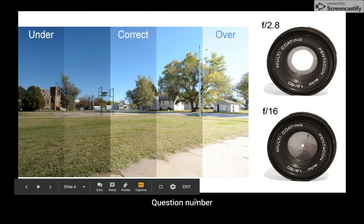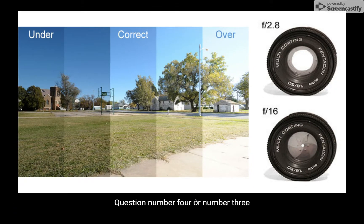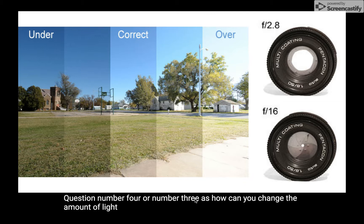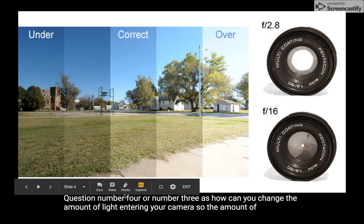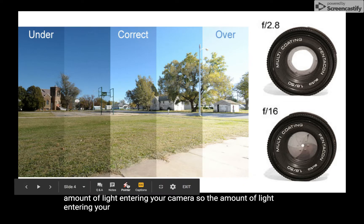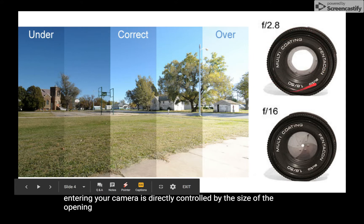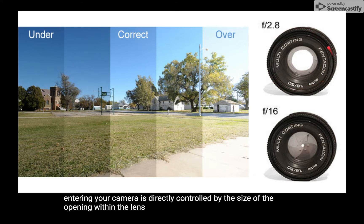Question number three asks, how can you change the amount of light entering your camera? The amount of light entering your camera is directly controlled by the size of the opening within the lens, which is controlled by the F number, or F stop.